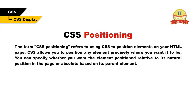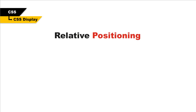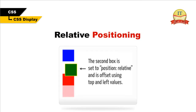CSS positioning refers to using CSS to position elements on your HTML page. CSS allows you to position any element precisely where you want it to be. You can specify whether you want the element positioned relative to its natural position in the page, or absolute based on its parent element. To determine this, you use the position property.